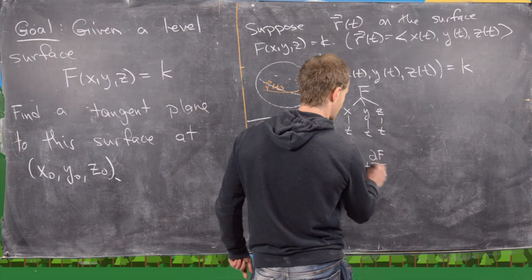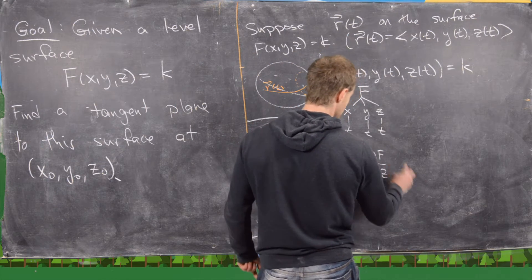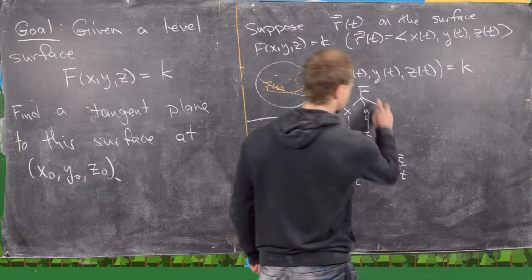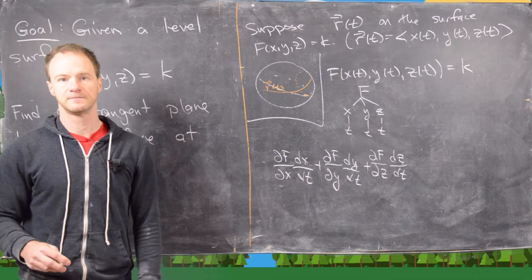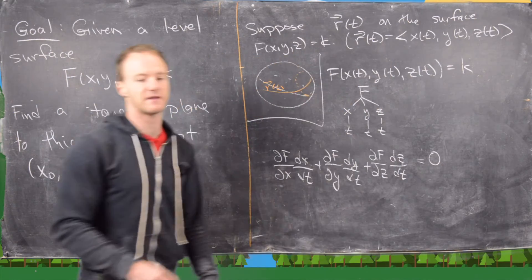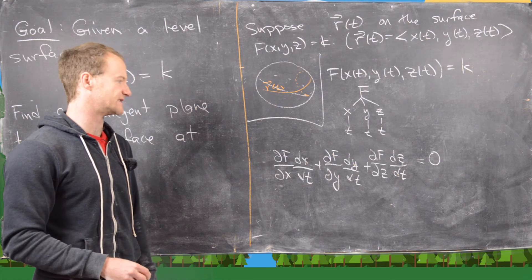Then finally we'll get the partial of f with respect to z times dz dt, and that's going down this last branch. Then we also have to take the derivative of the right-hand side, but that's a constant given that this is a level surface, so we get zero there.